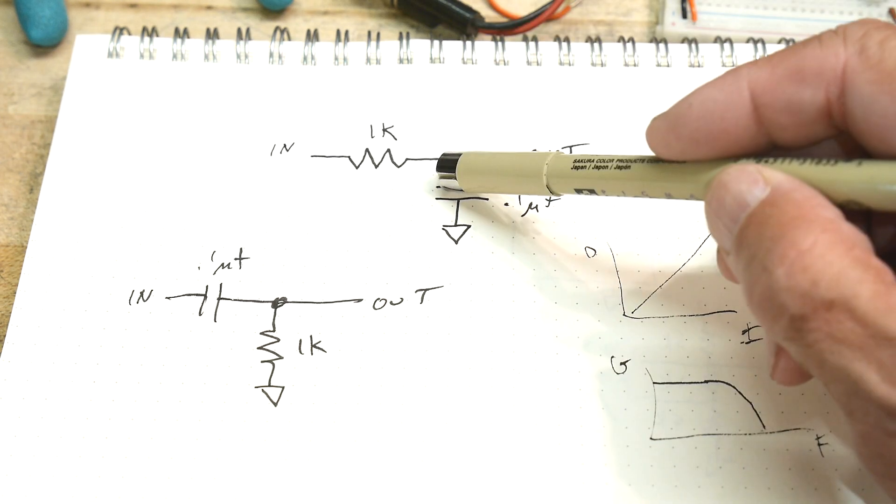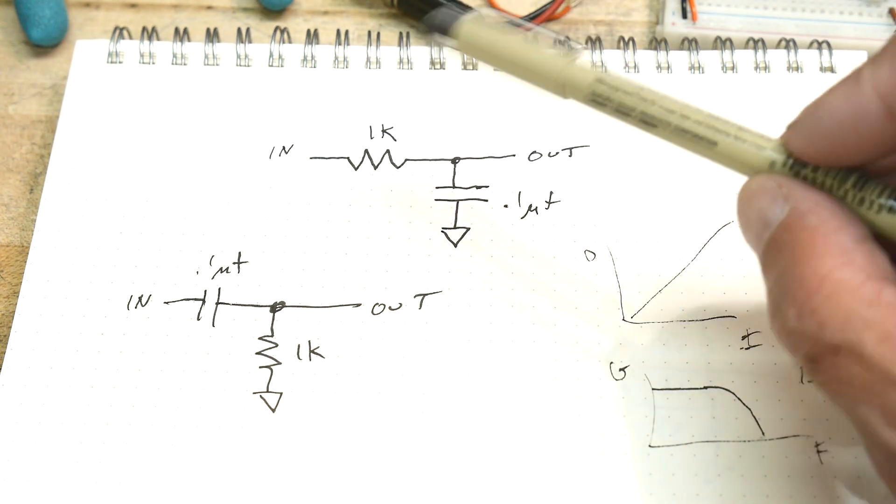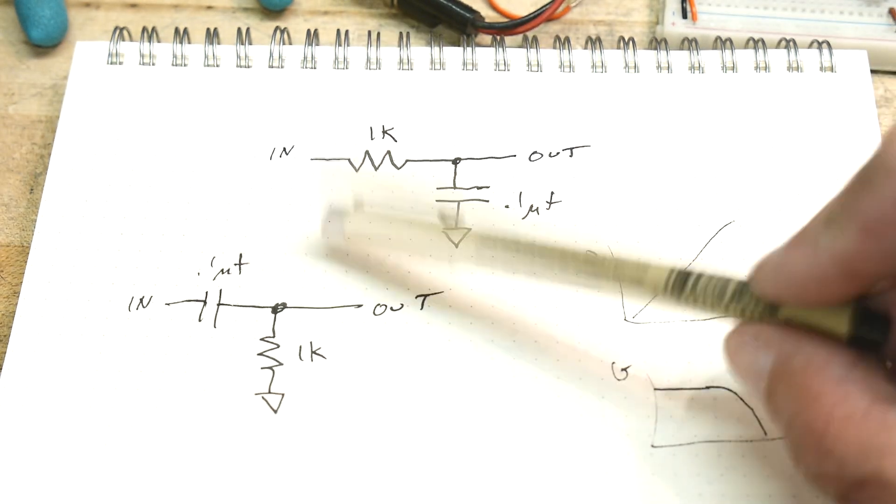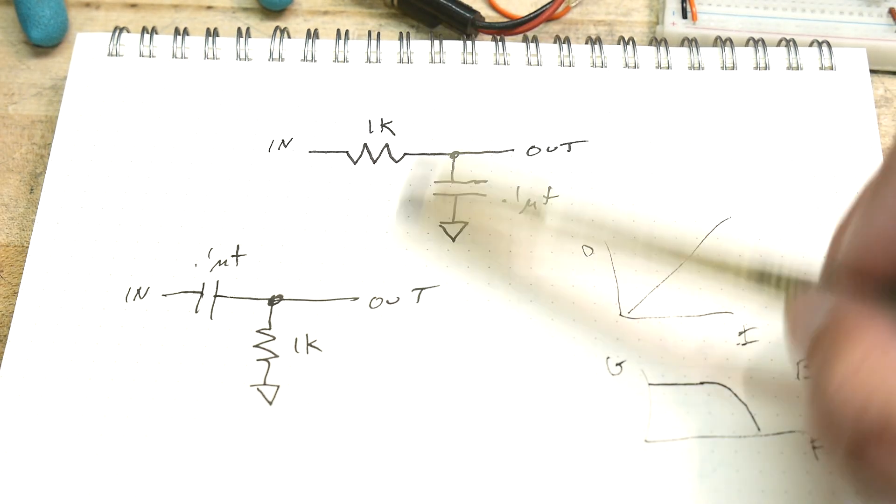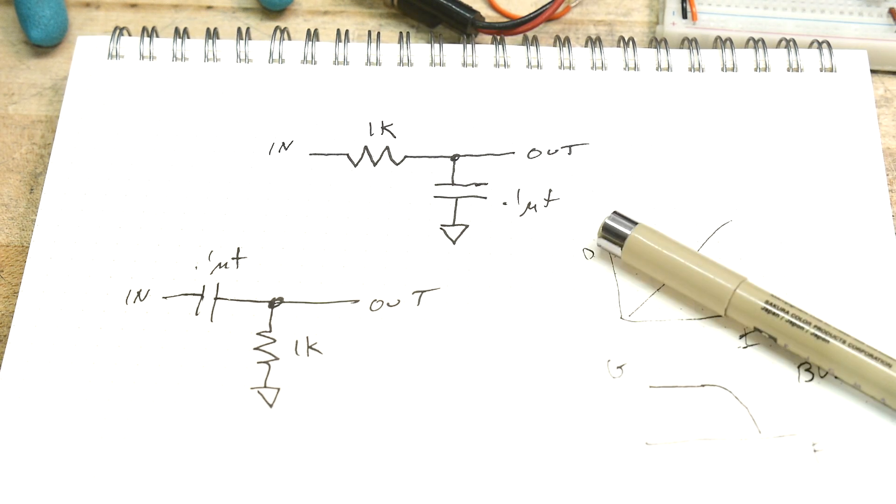All right, so we've done a Bode plot on a low-pass filter and a high-pass filter and kind of gave you an idea of what those look like. And a little bit of information that modern scopes have this built into them, which is really nice.